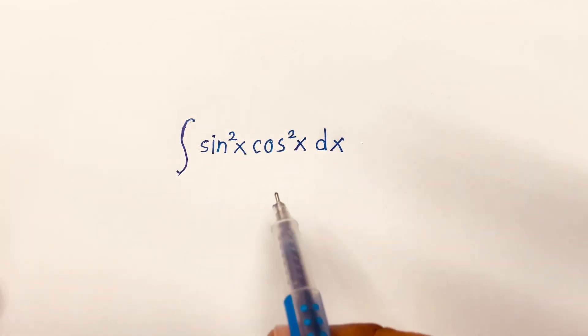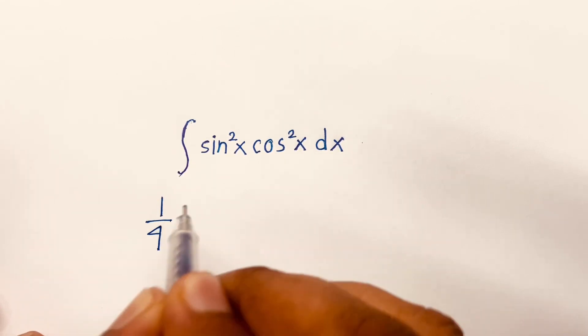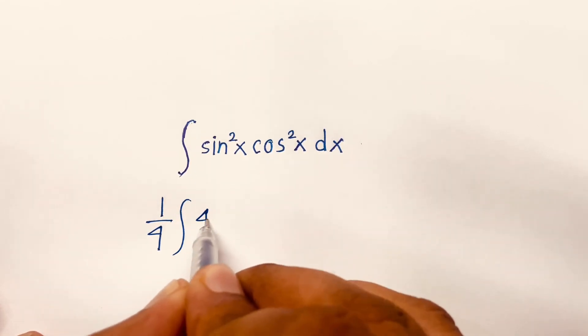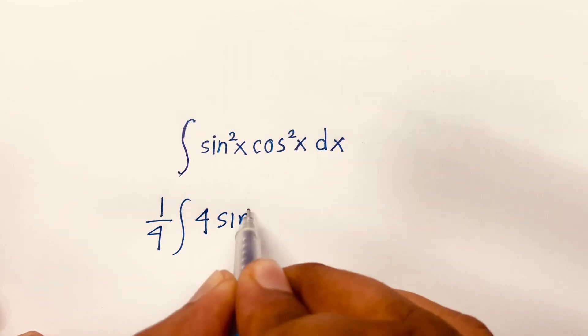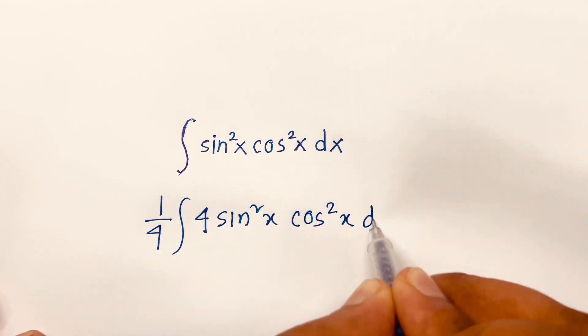How to solve integral of sine square x cos square x dx? So, it will be 1 over 4 integral of 4 sine square x cos square x dx.